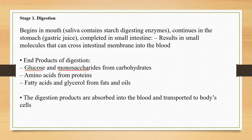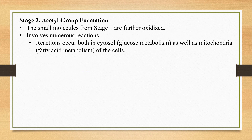The digestion of proteins produces amino acids. When fats and oils are hydrolyzed or degraded, the end products are fatty acids and glycerol. The digestion products are then absorbed into the blood and transported to the body's cells.